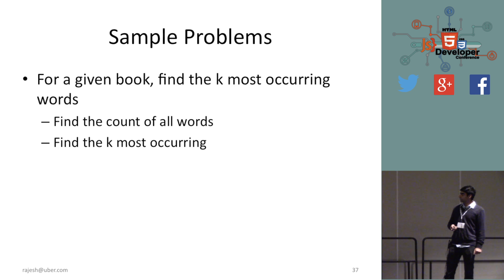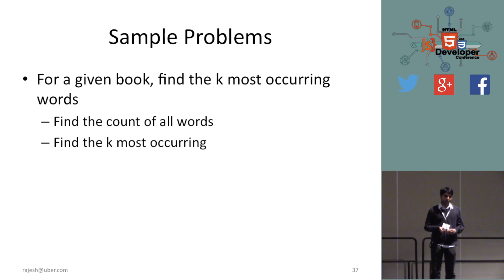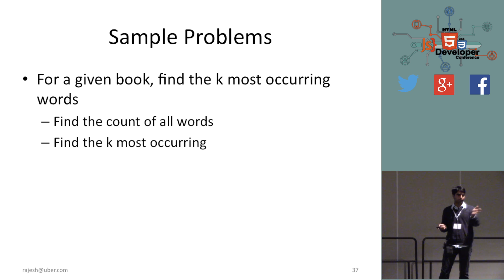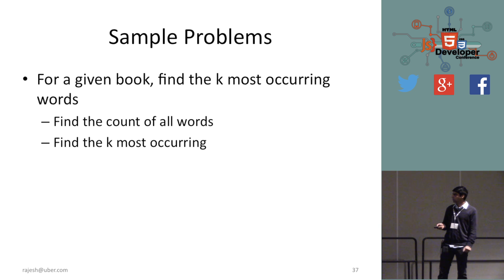Problem 4: Given a book, find the K most occurring words. You can use a map — for each word, go and keep incrementing its count. Then you have the count of all words and all you need to do is sort it. That gives you the K most occurring words.